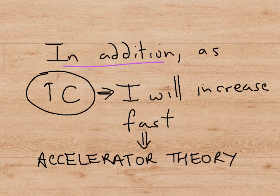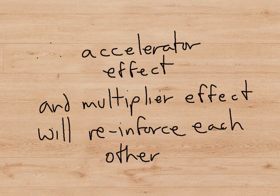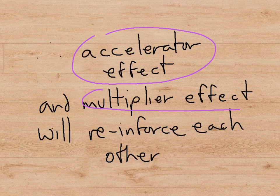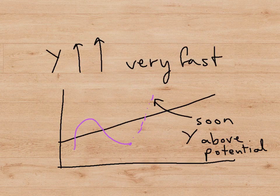In addition, as consumer spending increases, investment spending will increase quite fast, according to the accelerator theory, which says that investment spending depends on the rate of change of consumer spending. So, what we have now is that we have the accelerator effect and the multiplier effect reinforcing each other. Now, because both of these things happen and push output up very fast in the same direction, we can have a situation where even though we started at an output level which was below potential, we soon find that the output of the economy has risen to above its potential.